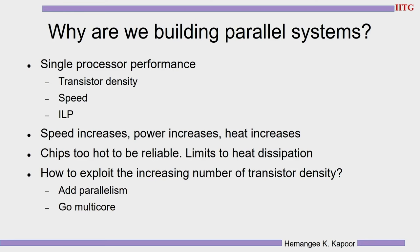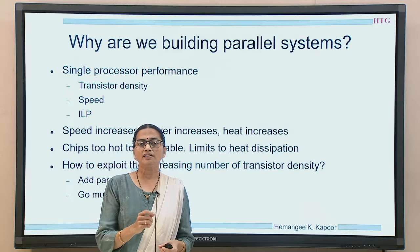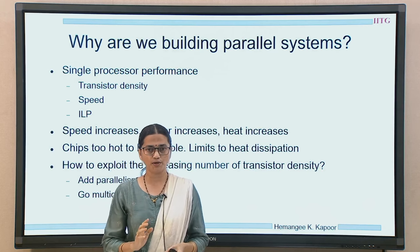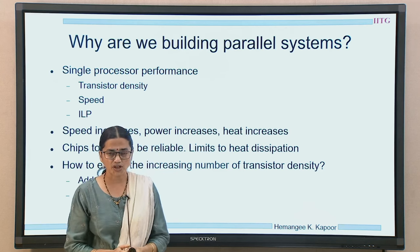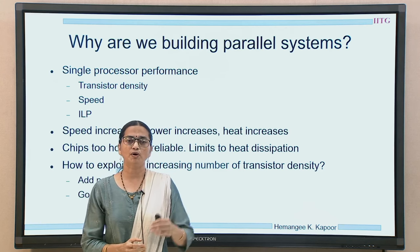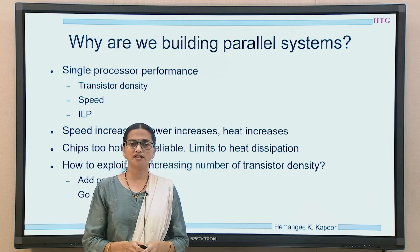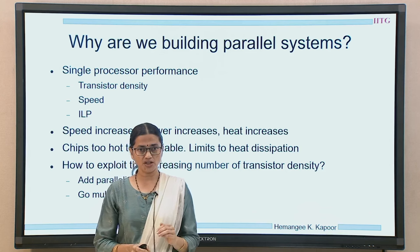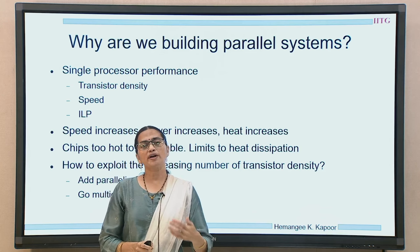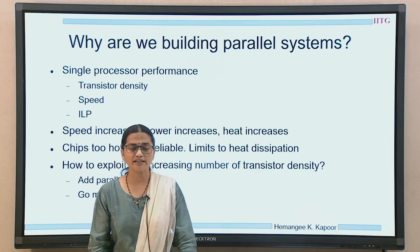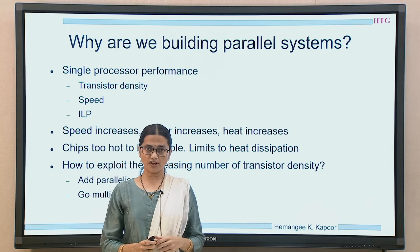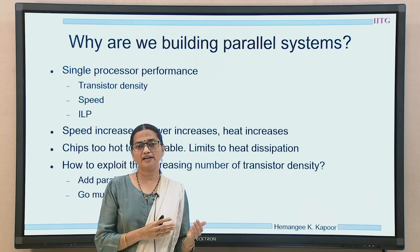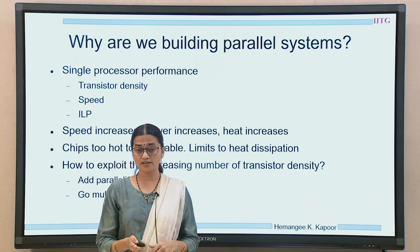But beyond a point, we could not increase the clock frequency because the frequency increase led to an increase in power consumption and heat dissipation. The heat increased and we could not manage that much heat on the IC, so we had to put a cap on the frequency of the processor. As the chips became too hot to be reliable, we had to limit heat dissipation and hence frequency stopped.